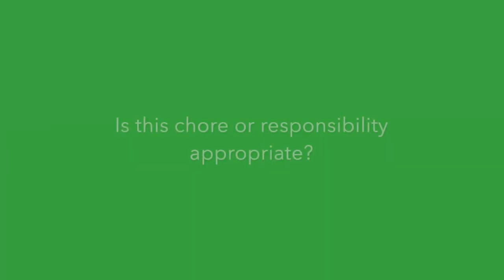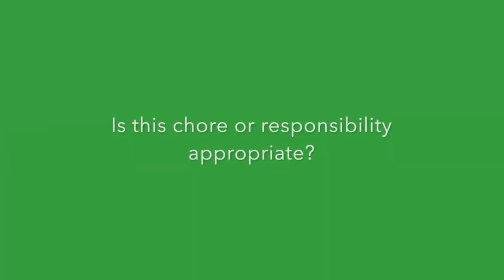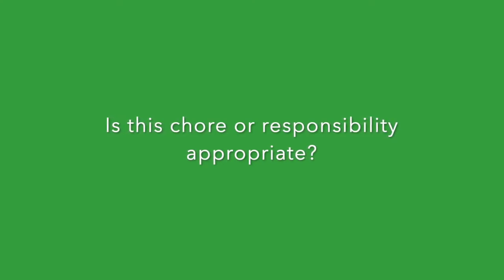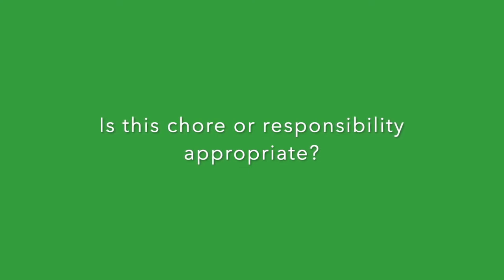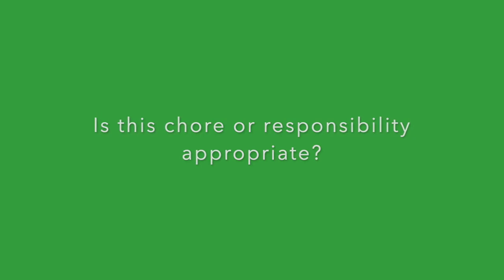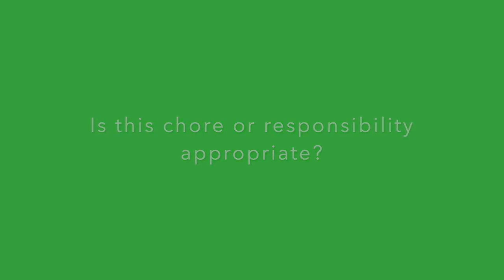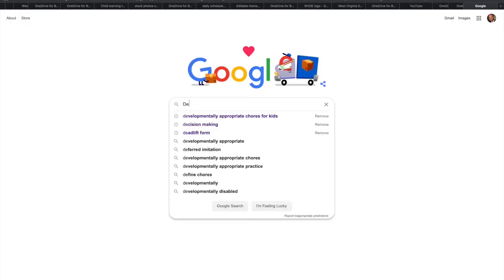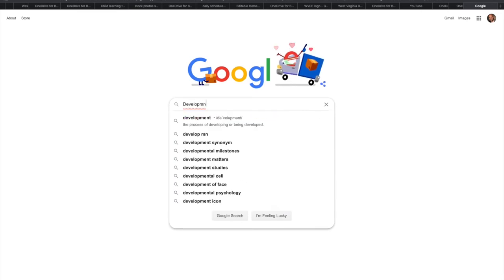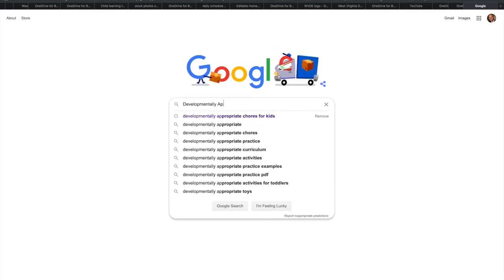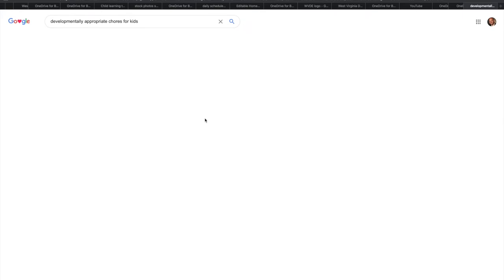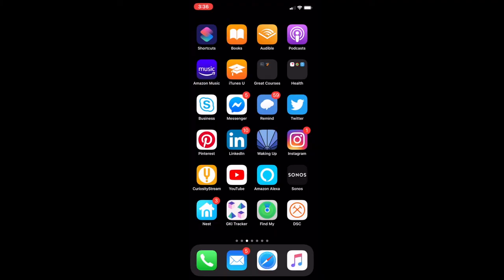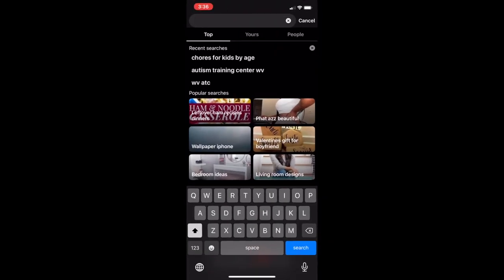The first place to start when thinking about a chore for your child is: is this responsibility developmentally appropriate? Taking into consideration your child's age, intellectual ability, and physical ability, is this a good chore that fits my child? If you need help figuring out what chores are developmentally appropriate, there are great resources online and some really good ideas on social media apps such as Pinterest.